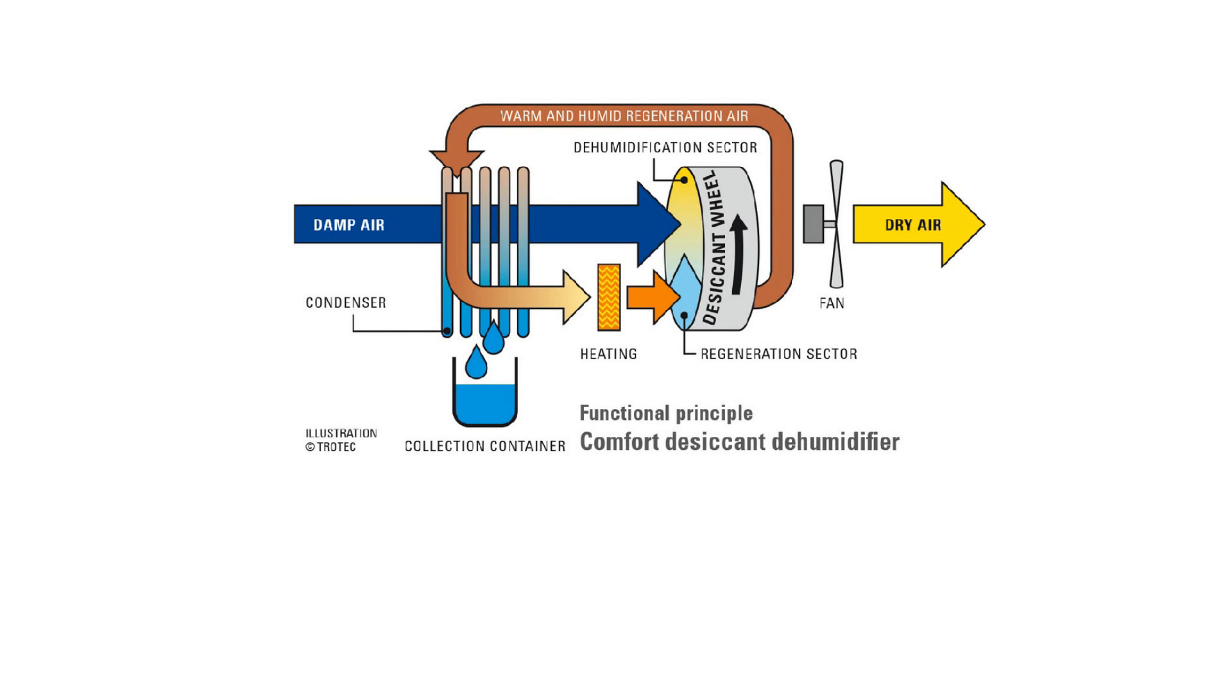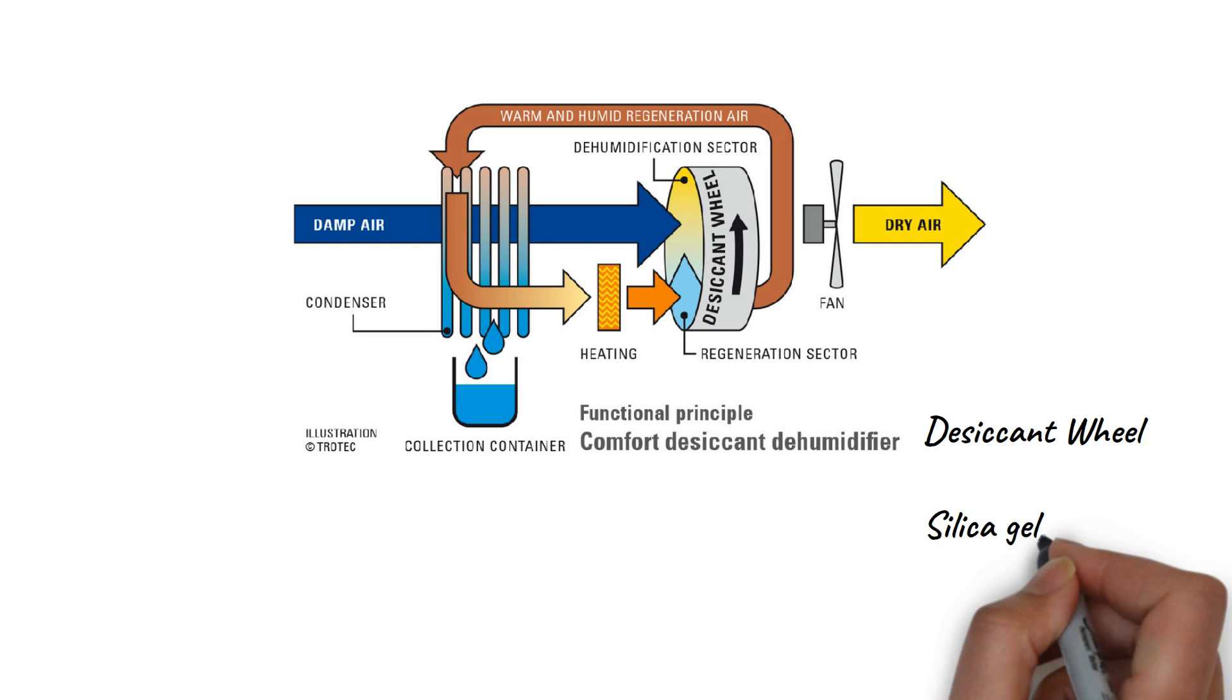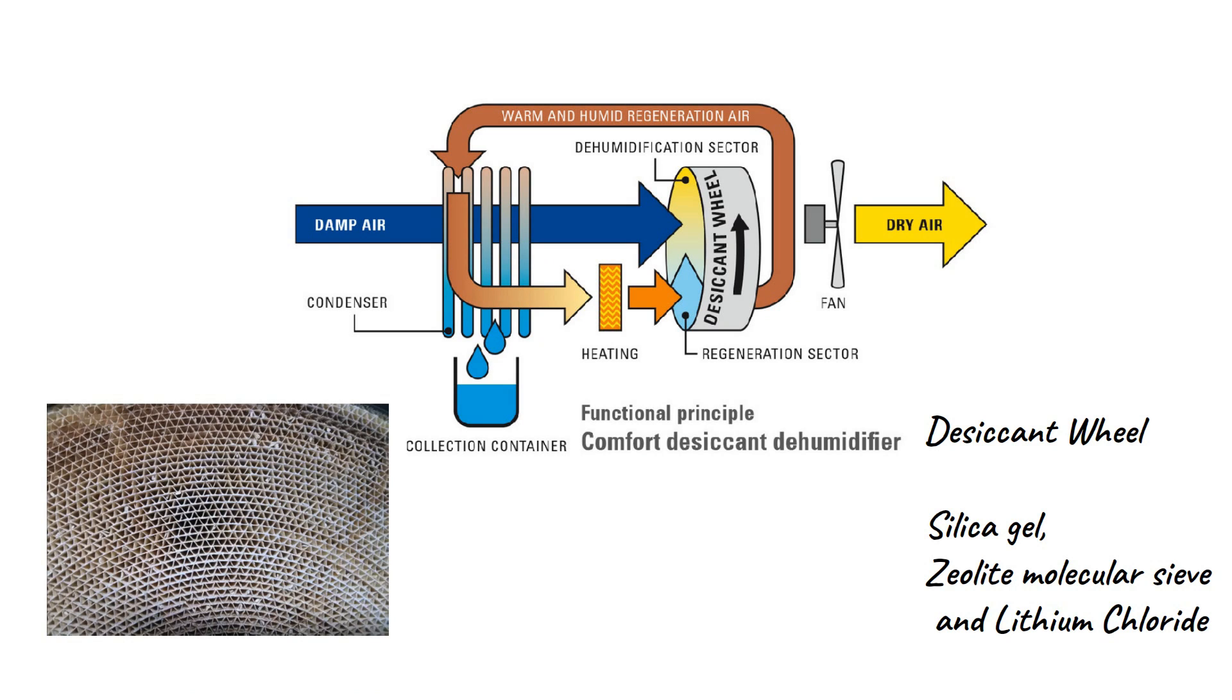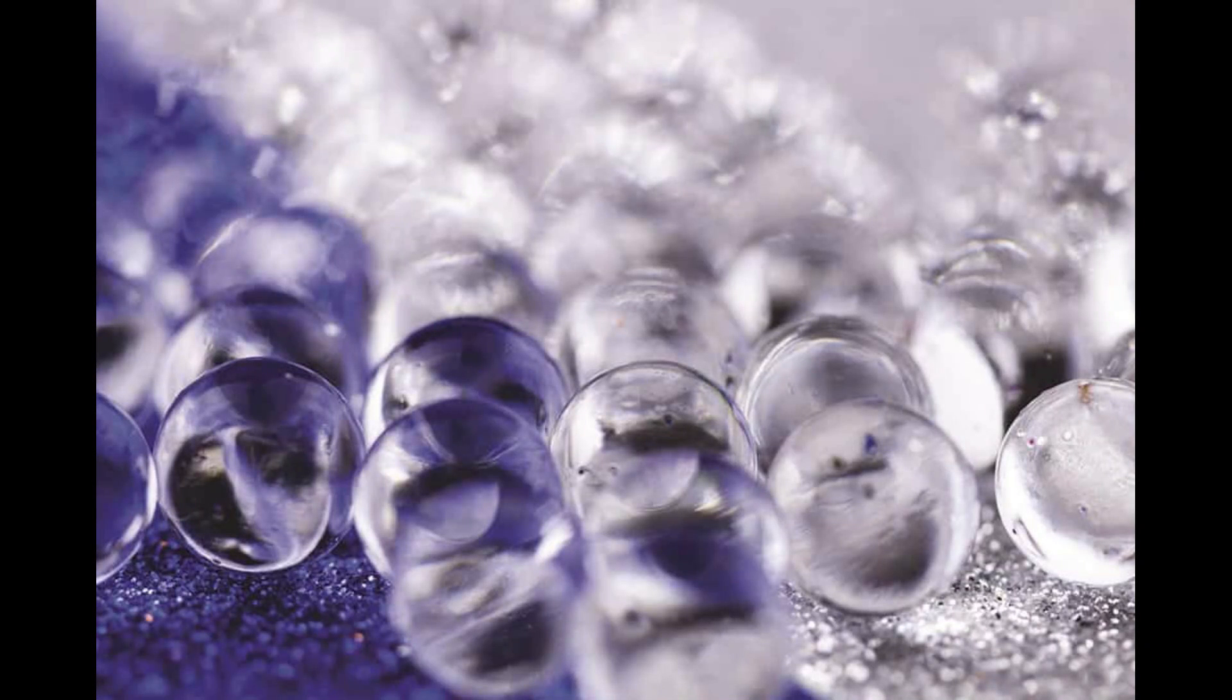Humid air is sucked and is passed through a desiccant wheel. The commonly used materials in desiccant wheels are silica gel, zeolite molecular sieve, and lithium chloride. These materials are hydrophilic, that is, once the humid air passes through them, they remove the moisture and dry air is left behind.